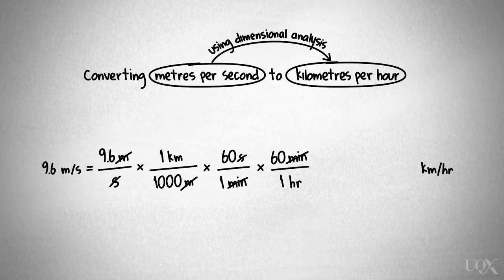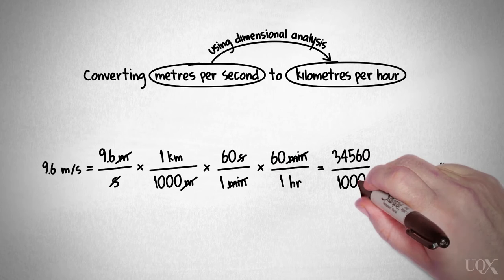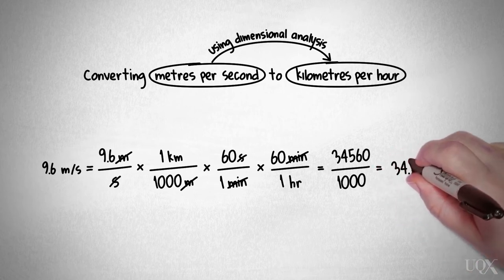Then, we multiply all our top values together and all our bottom values together, leaving us with a simple fraction to solve our problem, which gives us 34.5 kilometres per hour.